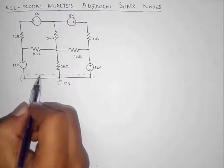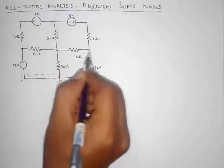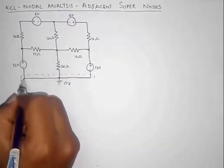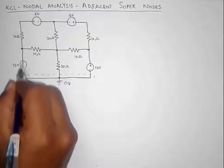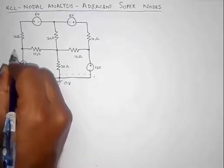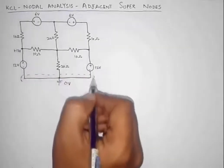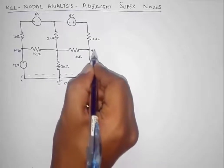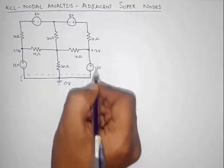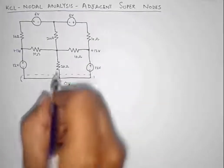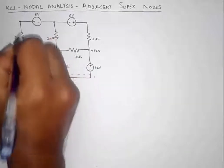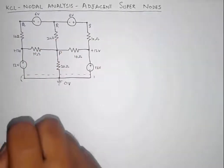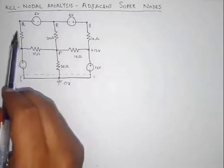Let us put the names of all the node voltages over them. You can see that this 12-volt voltage source will cause a voltage of plus 12 volts at this node, and similarly a 12-volt voltage on this node because of this source.